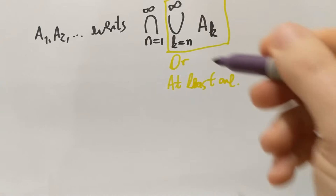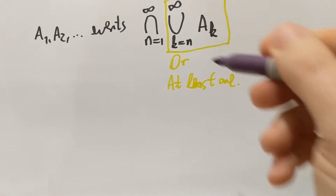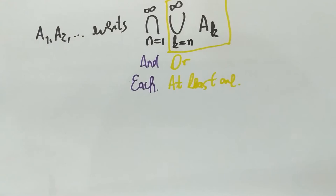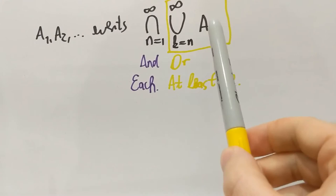Now, what is an intersection? An intersection means AND, or equivalently, if you have more than two events, EACH. So what's in yellow, that at least one of the AKs happens starting from index n, is actually true for every n. For every n, at least one of the events AK happen after the index n.